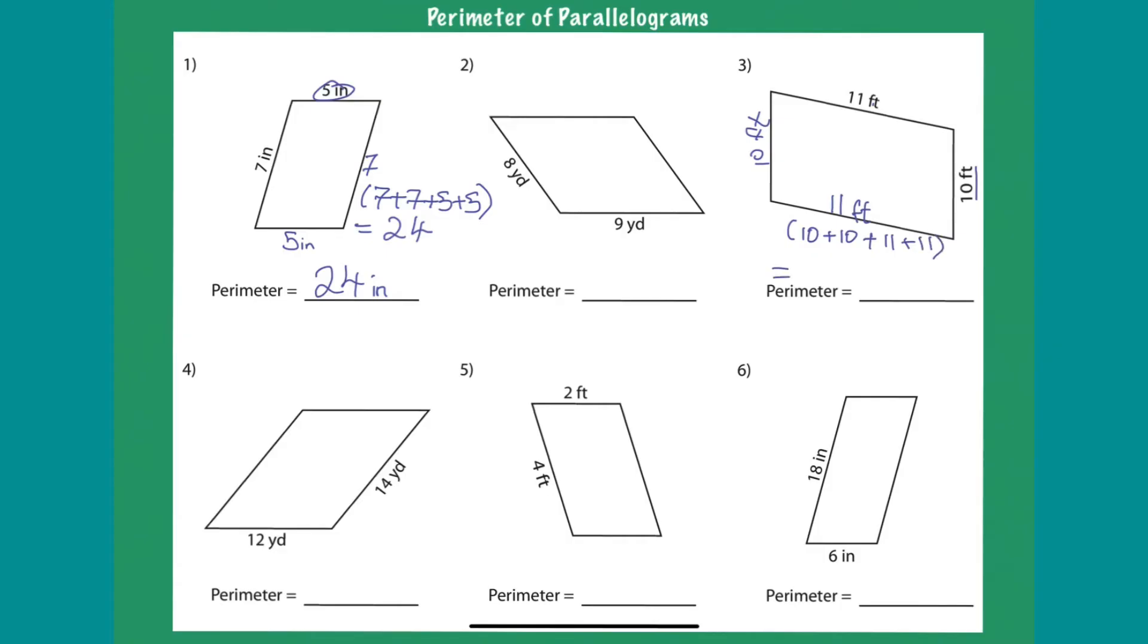And what do you get? Okay, so ten plus ten is twenty. Twenty plus eleven is thirty-one. Thirty-one plus eleven is forty-two. So your answer here is forty-two. But when you want to add the unit at the end, your answer here is forty-two feet, as the unit here is in feet.